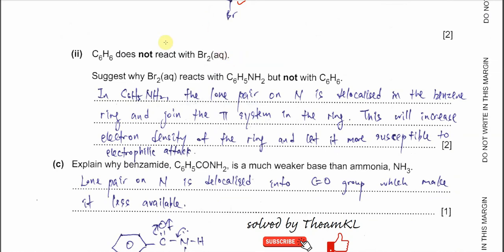Part B(2): Benzene does not react with bromine — it needs a catalyst. Phenylamine reacts because the lone pair on nitrogen delocalizes into the benzene ring and joins the pi-electron system, increasing the electron density in the ring. This makes it more susceptible to electrophiles, so it is more likely to react with bromine and form products.